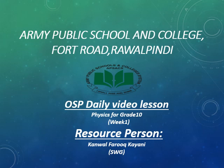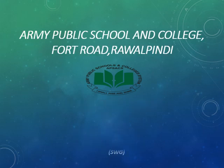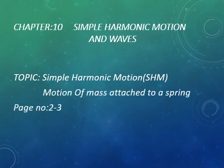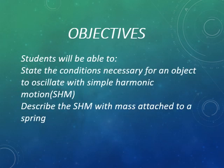I welcome you to the online sport program daily video lesson, physics for class 10th. We will start from chapter 10, that is simple harmonic motion and waves. The topic we are going to discuss today is simple harmonic motion and motion of mass attached to a spring, given on page numbers 2 and 3 of your textbook. At the end of the lecture, inshallah you will be able to state the conditions necessary for an object to oscillate with simple harmonic motion and describe the simple harmonic motion with mass attached to a spring.